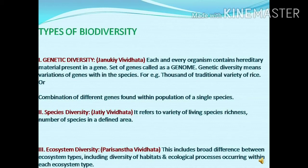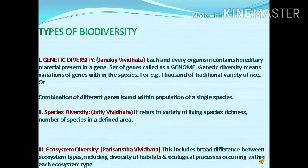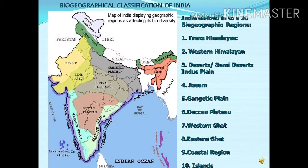There are three types of biodiversity we can scientifically classify: genetic biodiversity, species biodiversity, and ecosystem biodiversity. Genetic biodiversity is based on variation of the genome structure — each organism has different genes or a different set of genes called a genome, and these genetic variations reflect among organisms. Species diversity refers to the variety and richness or number of different species in a defined area. Ecosystem diversity means the broad difference of ecosystem types, including diversity of habitats and ecological processes occurring within each ecosystem type.